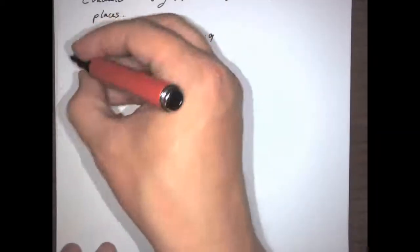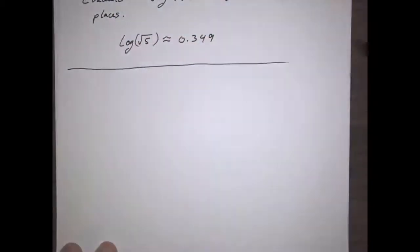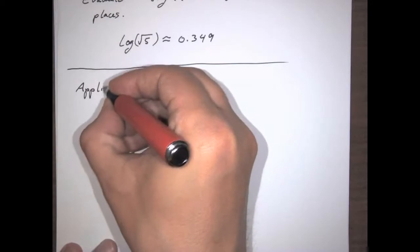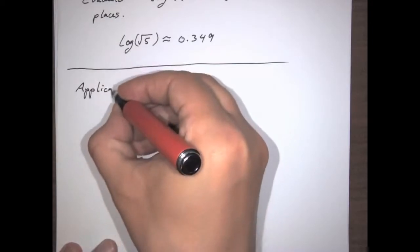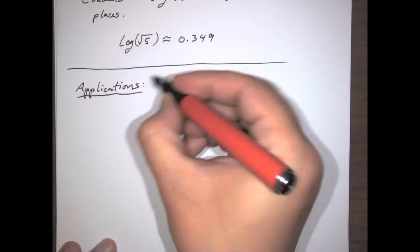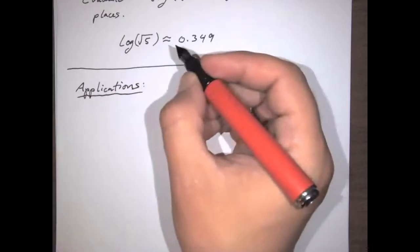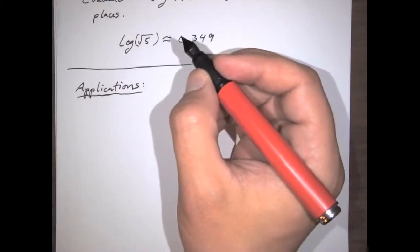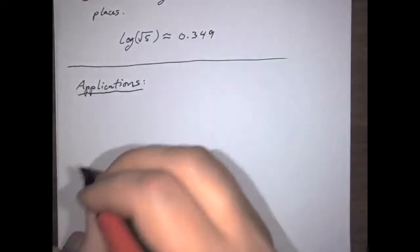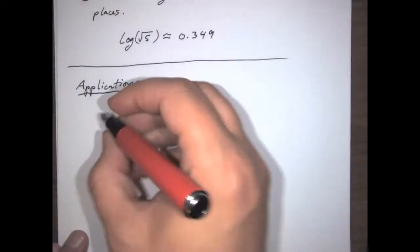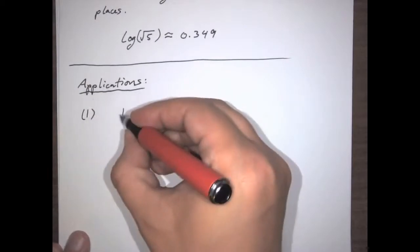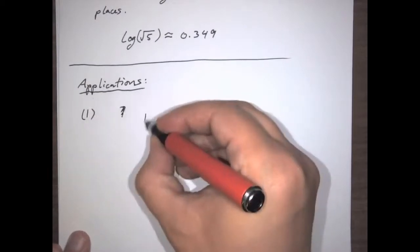Now, we can talk about some places where logarithms are used in applications. There are a number of places where one will find a logarithmic function in an application, but the main ones we're going to look at come primarily from physics and chemistry. The first one is pH — this is in chemistry.